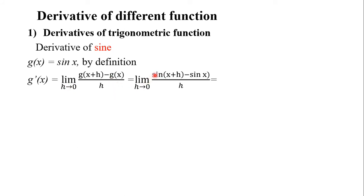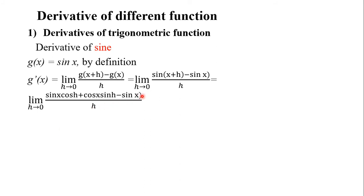We have the limit of sin(x + h) minus sin(x) over h as h approaches 0. Expanding sin(x + h) using the angle addition formula gives sin x cos h plus cos x sin h.